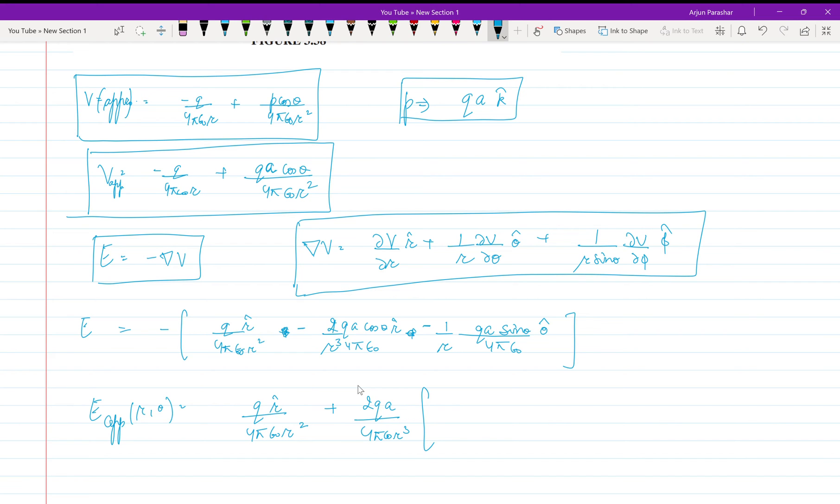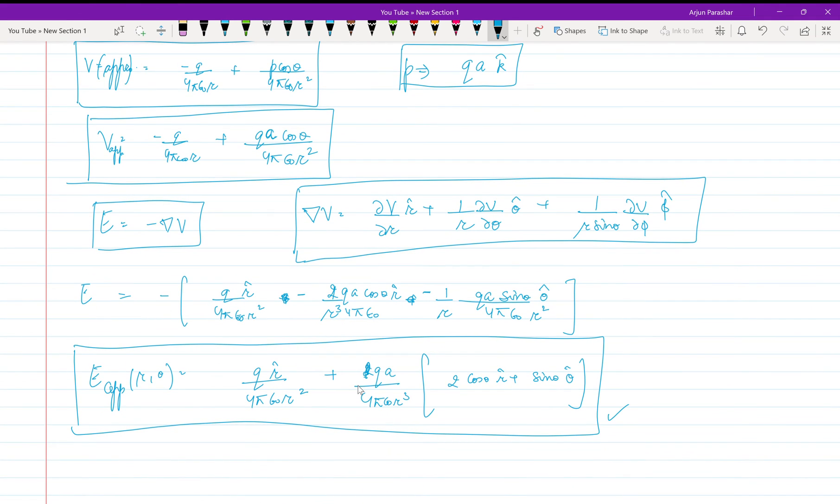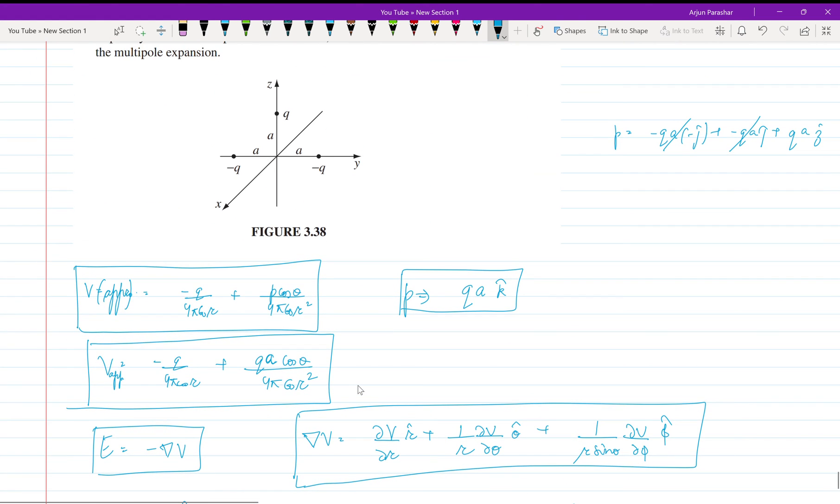One R squared I forgot to write here. So we get 2 cos theta R cap plus sine theta theta cap. This is the approximate electric field that we'll get for these charges. We can see that this electric field we already derived for a dipole - this is for the monopole thing - so we have verified our result.